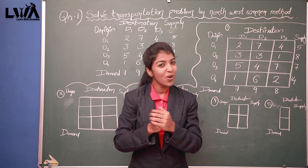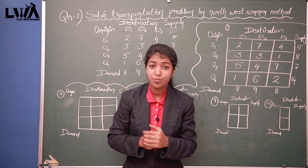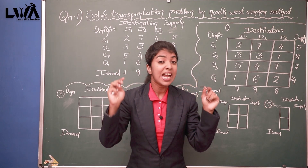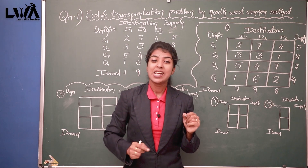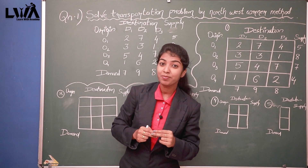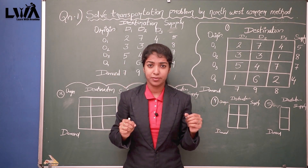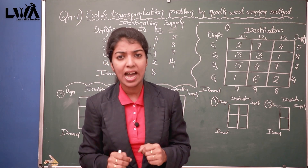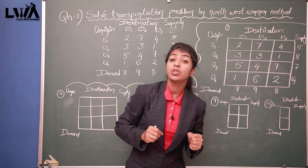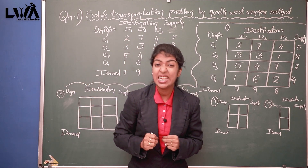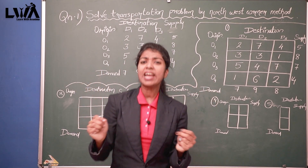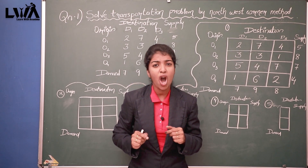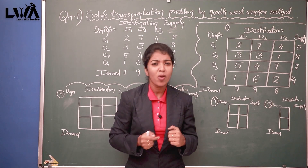For evaluating the transportation cost, this transportation problem is used. For this we need mainly three pieces of information: one is the destination of the supply, second is the origin of the supply, and finally the unit cost of the product. This transportation problem is mainly solved using three methods: first is the North West Corner Rule, second is the Least Cost Method, and finally Vogel's Approximation Method.